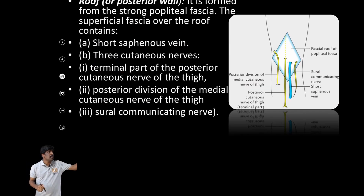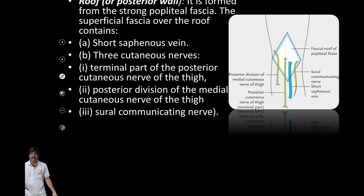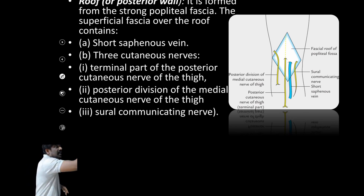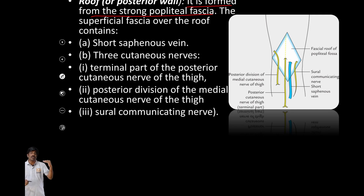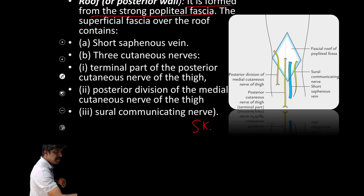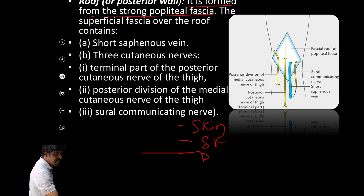Coming to the roof, the roof contains skin, superficial fascia, and then deep fascia. First skin, then after the skin, superficial fascia, and then deep fascia.